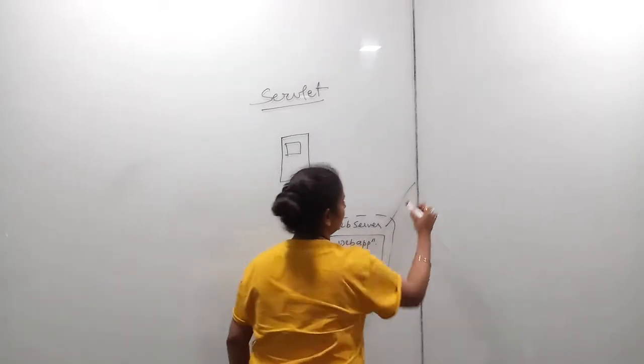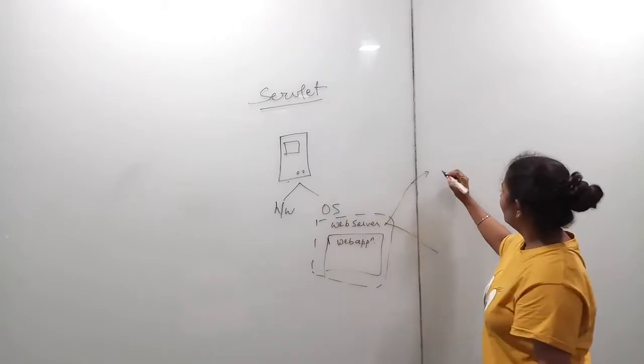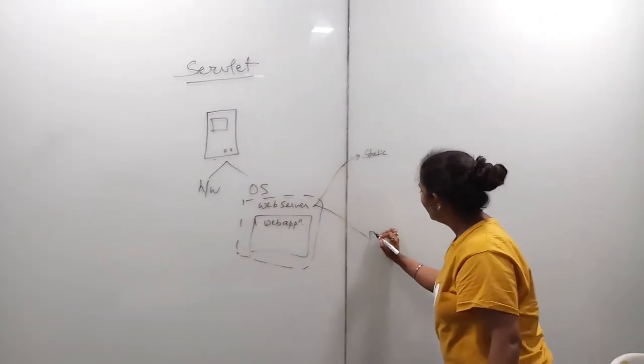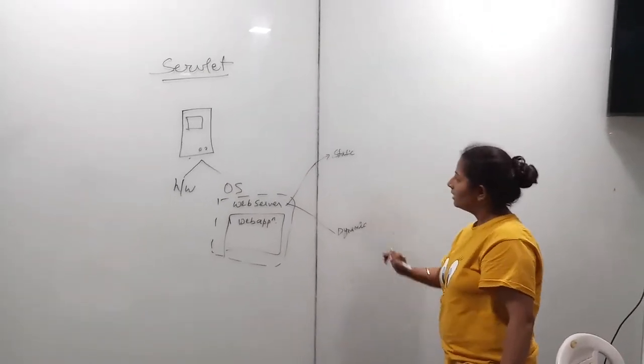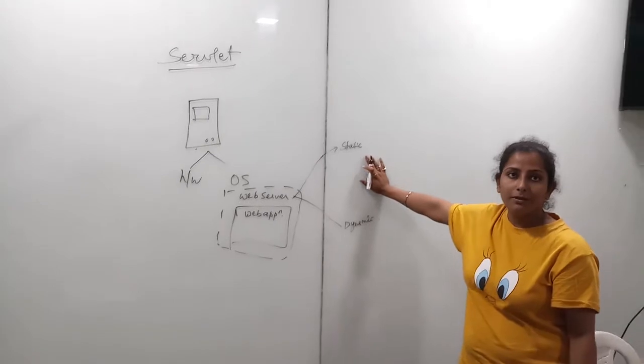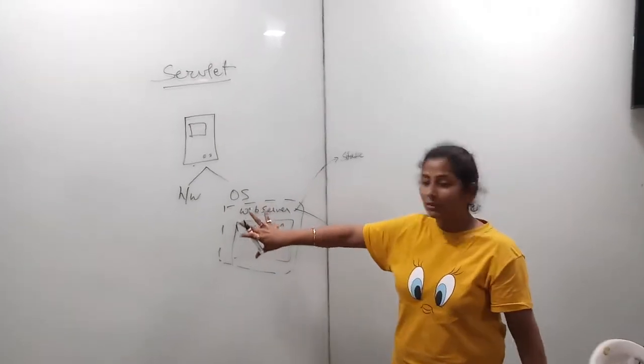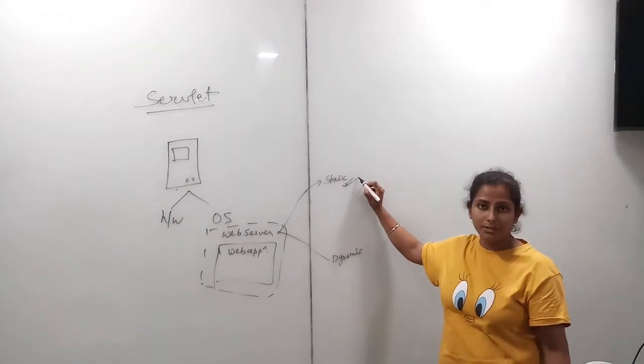We will see web servers. There are two types of web server. First is static. Static web servers are nothing but when all the resources are available, already available in our server before making any requests, then it is called as static web server.